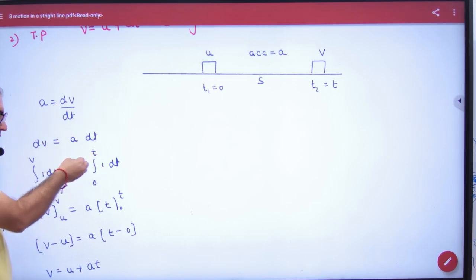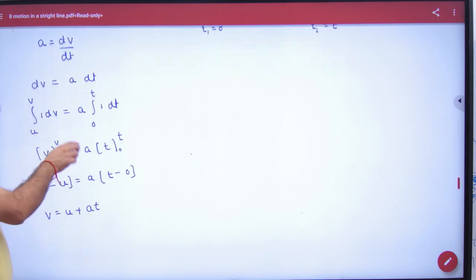Acceleration because constant is integration. Time limit, what do you think? 0 to t. So the integration of dv is v, like the integration of dx is x. Where from where? u to v.